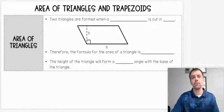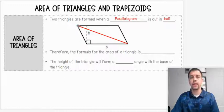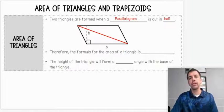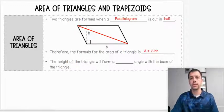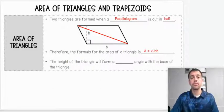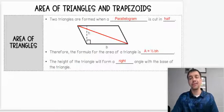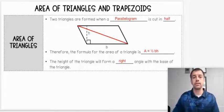So two triangles are formed when a parallelogram is cut in half. Notice I put a line through the parallelogram there. Therefore, the formula for the area of a triangle is area equals one-half base times height. The height of the triangle will form a right angle—a 90-degree angle—perpendicular to the base.